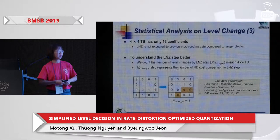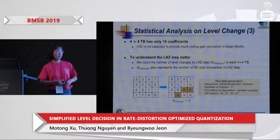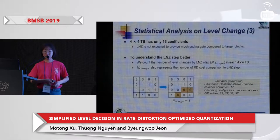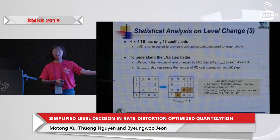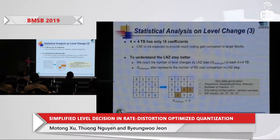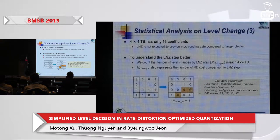To better understand the LNZ step, we count the number of level changes it causes, denoted as N_change, in each 4×4 transform block. An example with N_change equals three shows three levels changed after the LNZ step, moving the last non-zero coefficient location toward the top-left. N_change also represents the number of RD cost comparisons in the LNZ step.